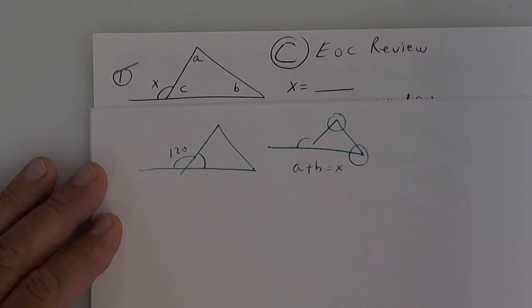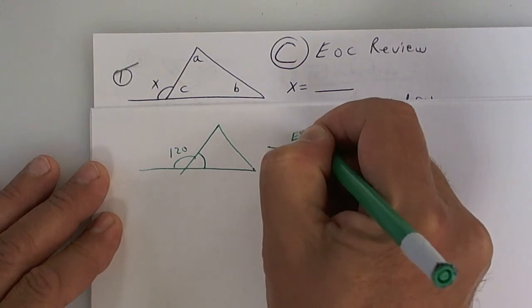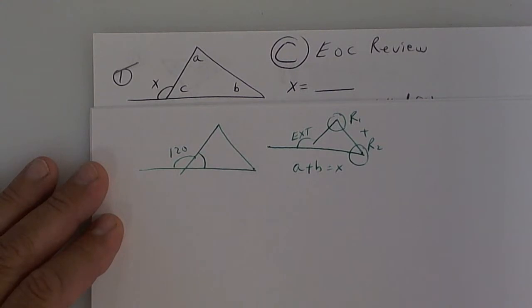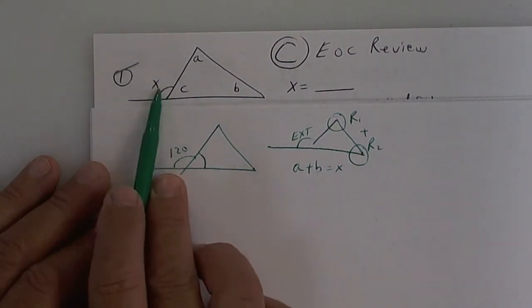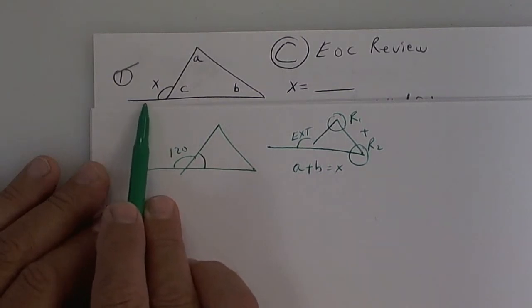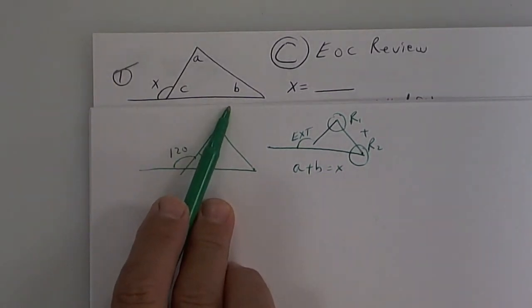The formula I gave you was the exterior angle is equal to the remote plus the remote. Some kids chose not to remember that formula, but that's what they're asking for. If you put 180 minus C, the problem is it's multiple choice and that wasn't one of the choices. You've got to know what I just told you.